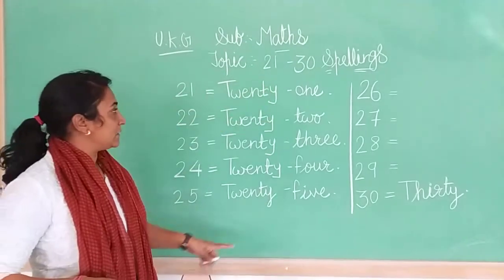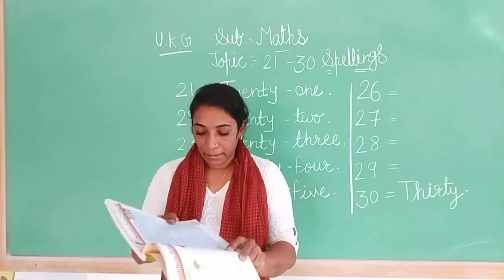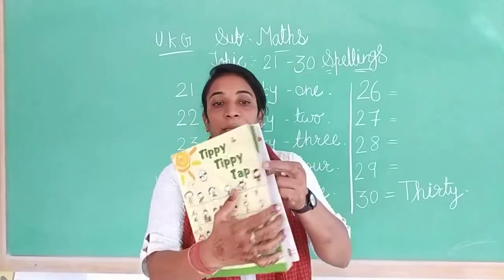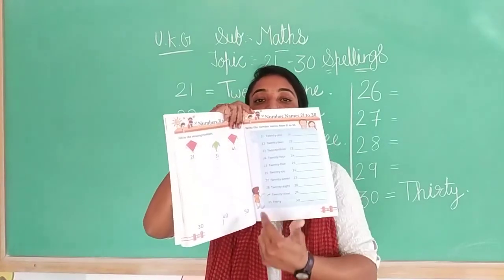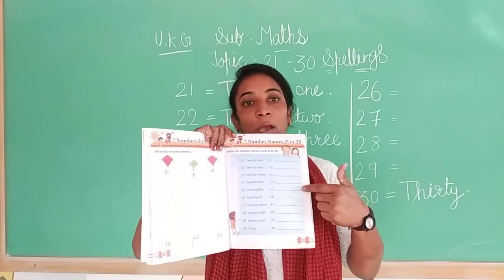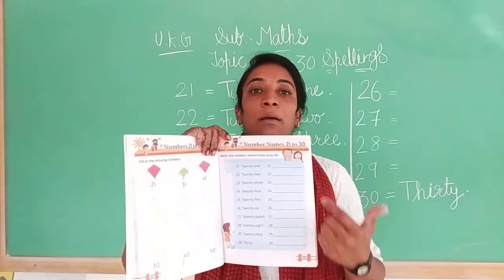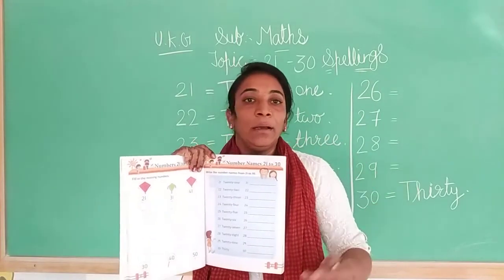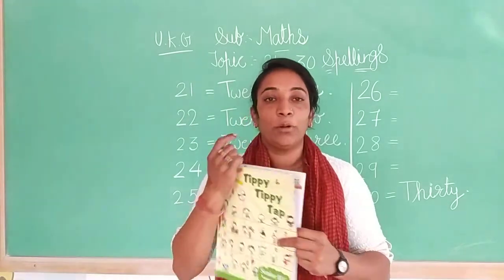Do this exercise in your maths notebook with good handwriting, and in your maths textbook page number 41, 21 to 30 spelling. All of you look and copy here. This is your homework. Write with good handwriting, and say and write and practice again and again in your maths notebook. Thank you.